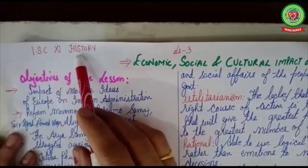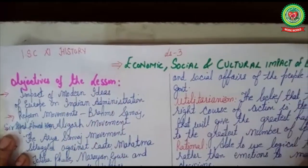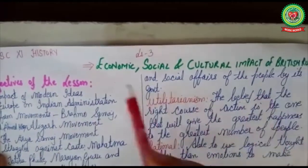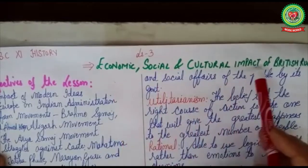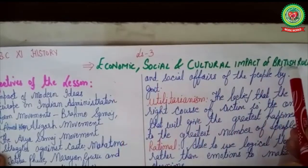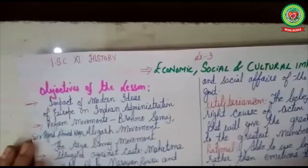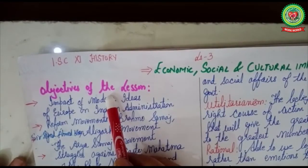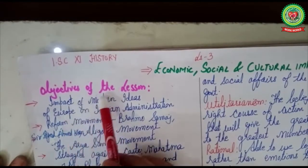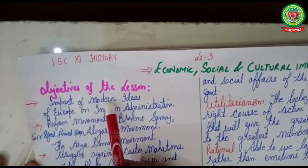Welcome to ISE plus one history class. Today we are going to start Lesson 3: Economic, Social and Cultural Impact of British Rule. First we will go through the objectives of the lesson.